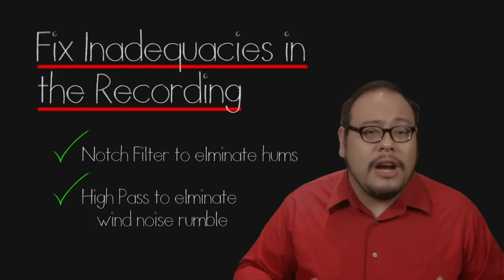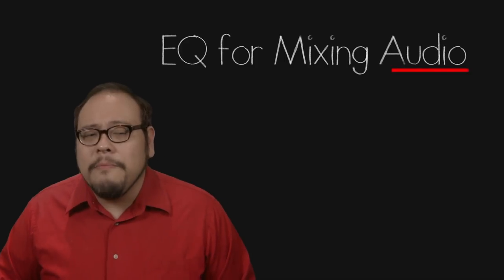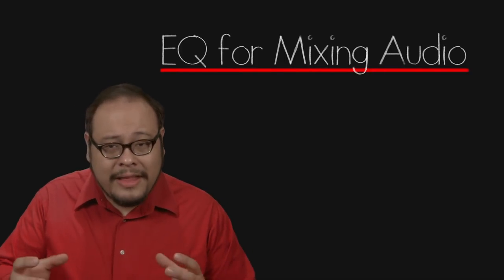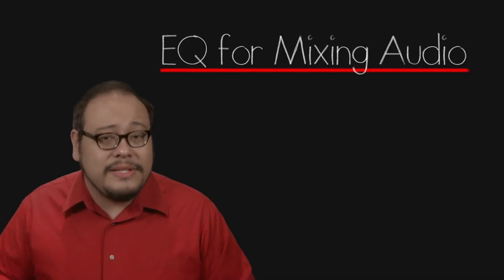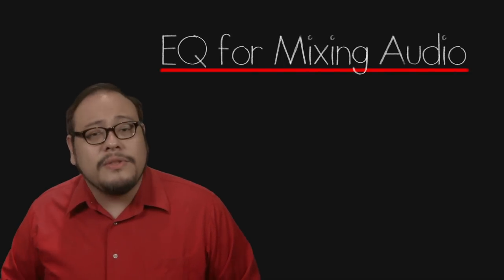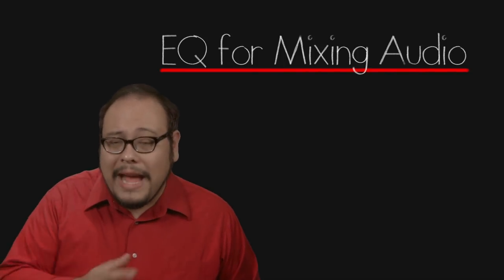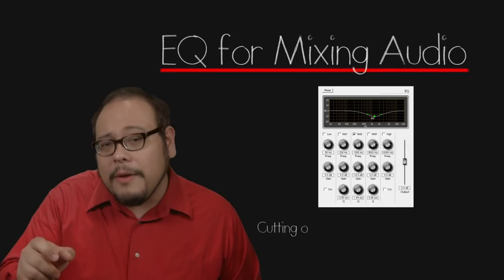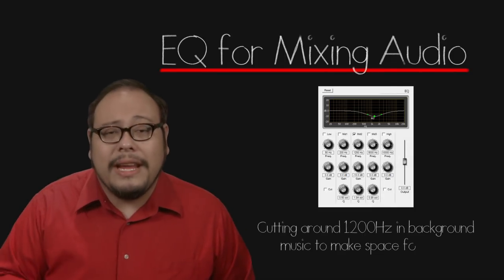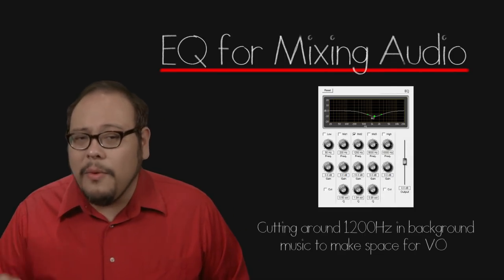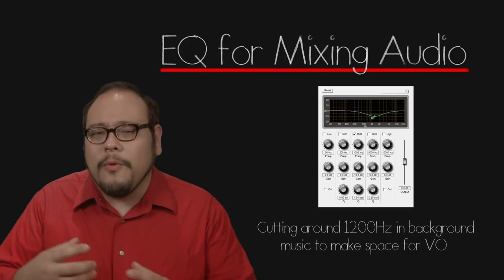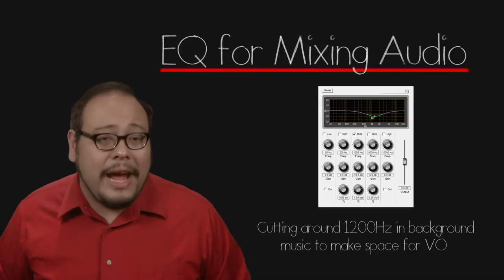You can also target specific hums with a notch filter and eliminate them or use the high pass filter to cut low range rumble caused by wind noise. The second use is when you're mixing audio sources and they are competing in a similar frequency space. A common occurrence when mixing voice over with background music. If you cut the background music in the 1200hz range, the sweet spot of human voice, you can make some more room for dialogue or voice over tracks.